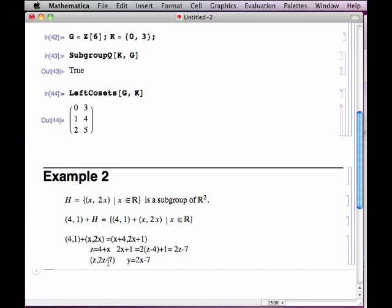Okay, so these are two examples of cosets. Again, the important thing is to notice that the set, the group itself is partitioned into cosets of a given subgroup.